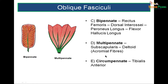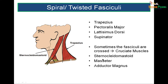There is another type of pennation called circumpennate, seen in the leg tibialis anterior muscle. Spiral or twisted fasciculi are seen in the trapezius muscle, also the pectoralis major and latissimus dorsi where fibers get twisted. Sometimes the fasciculi even get crossed, as in the sternocleidomastoid where the fascicles cross each other, giving you the cleido fibers and the sternal fibers.